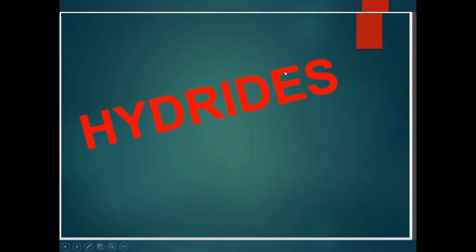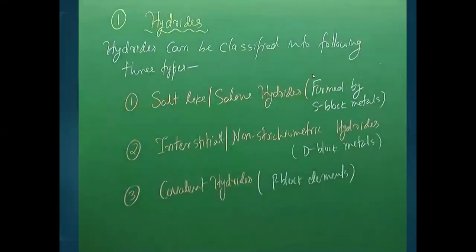Hydrides are divided into three main categories based on which elements form them. First are ionic, salt-like, or saline hydrides, which are formed by s-block metals. In s-block we have group 1 and group 2, and when these metals combine with hydrogen they form ionic hydrides.